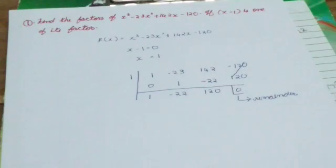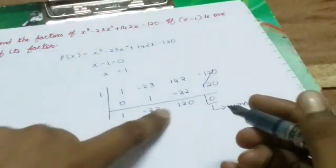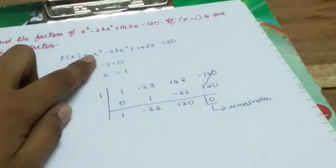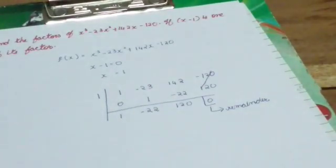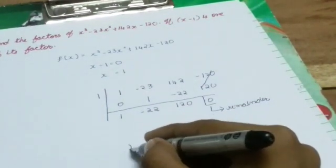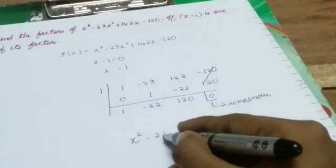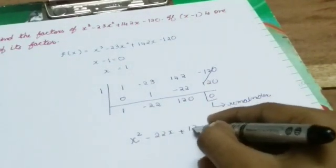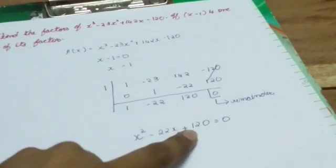The next step is to take the same coefficients and convert from trinomial form to binomial form. The first coefficient is 1, giving us x squared. The coefficient of x is minus 22, and the constant is plus 120. So we write x squared minus 22x plus 120 equals 0.